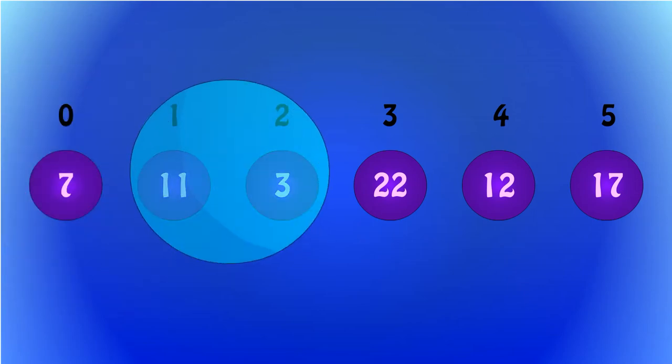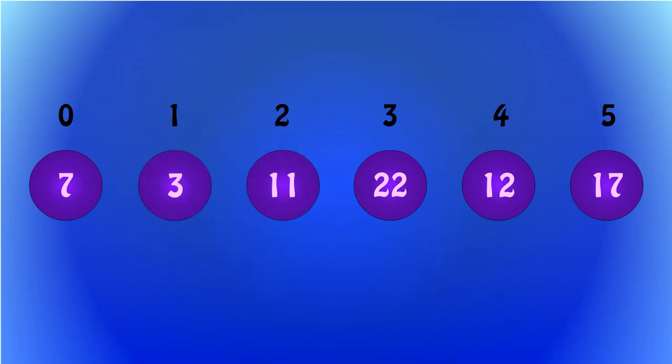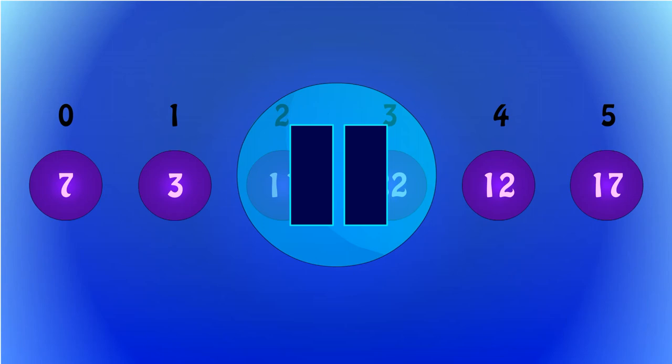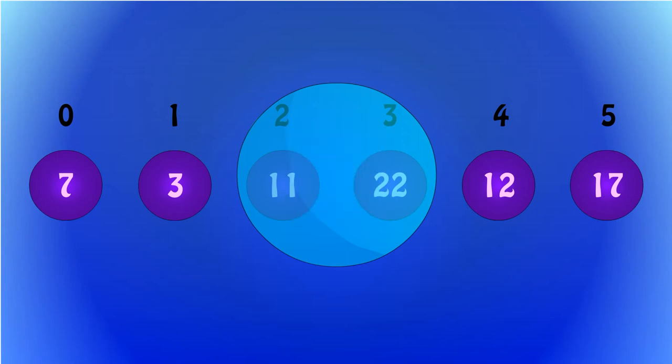Now, the CPU checks if 11 is greater than 3, so 11 and 3 switch places. It then moves again to the next two indices. The CPU now checks 11 and 22. Pause the video and guess what happens. If you said 11 is not greater than 22, so the bubble moves on again, then you were right.